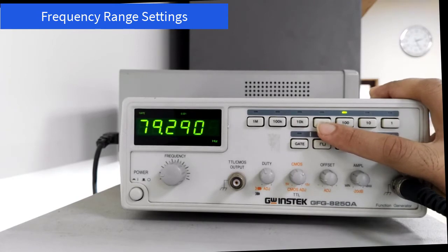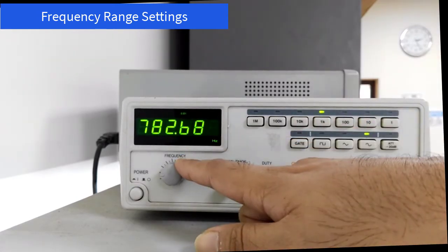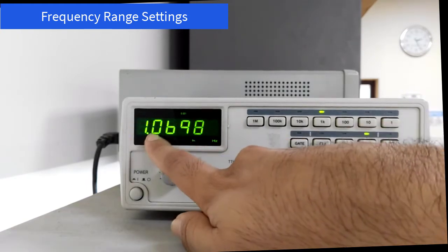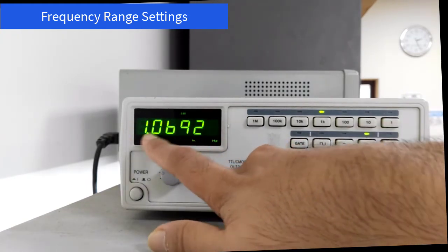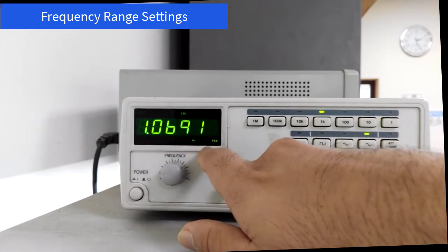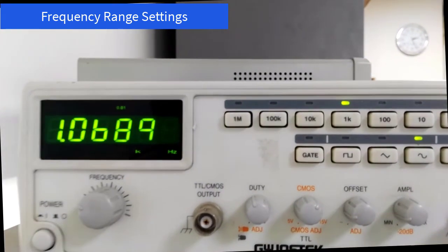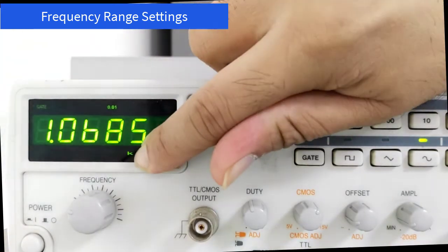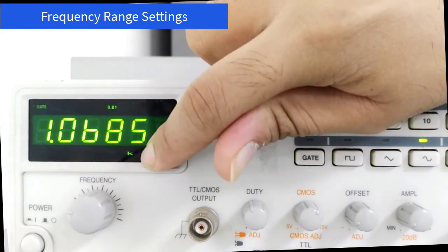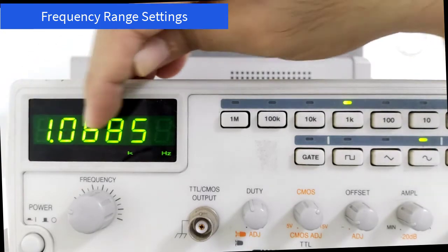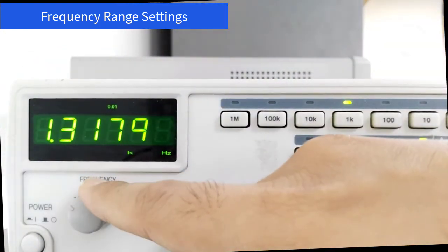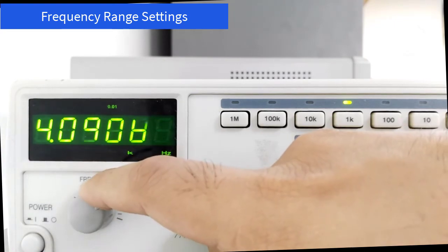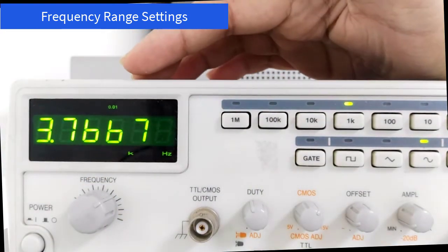When you go to this 1 kilohertz range, as you keep on increasing, you will see that after around 990 hertz, the display changes to 1.0693 kilohertz. When this K symbol is lit up in this display, it signifies that the output frequency is in kilohertz range. As you rotate the knob, the output frequency will increase and you will set the frequency to your desired value by looking at this screen. This display is pretty accurate.